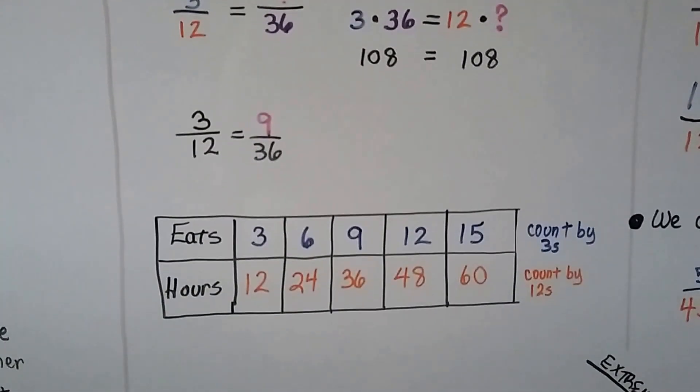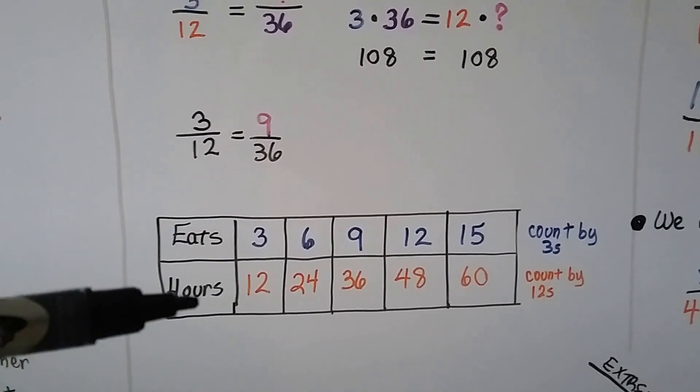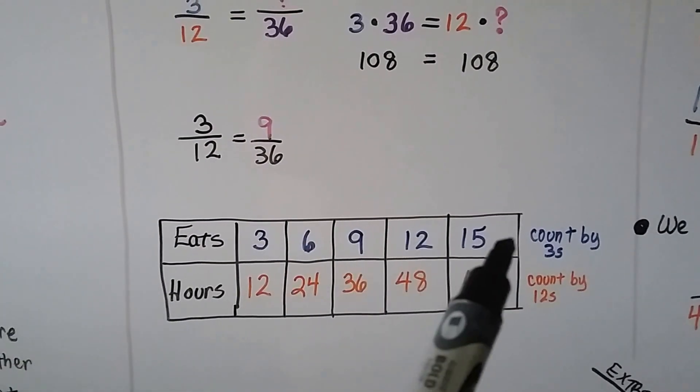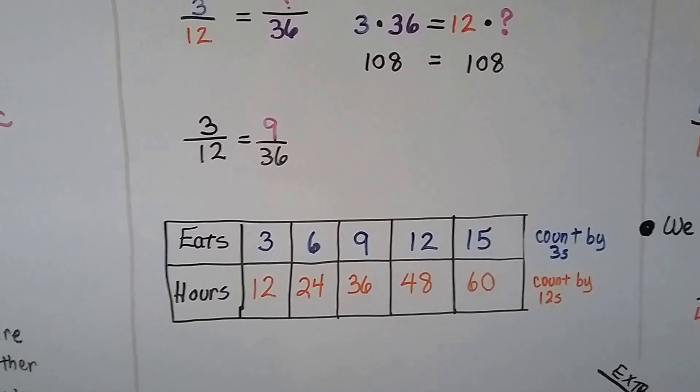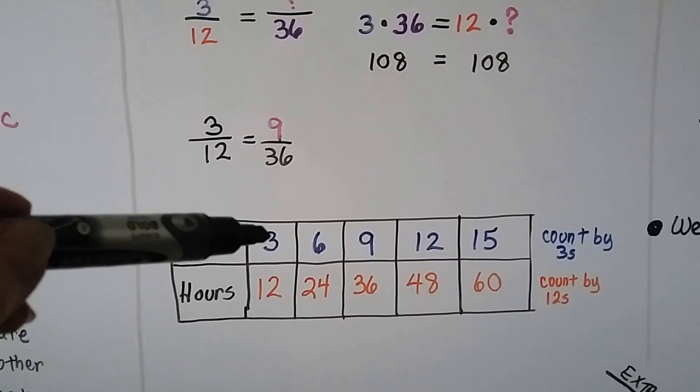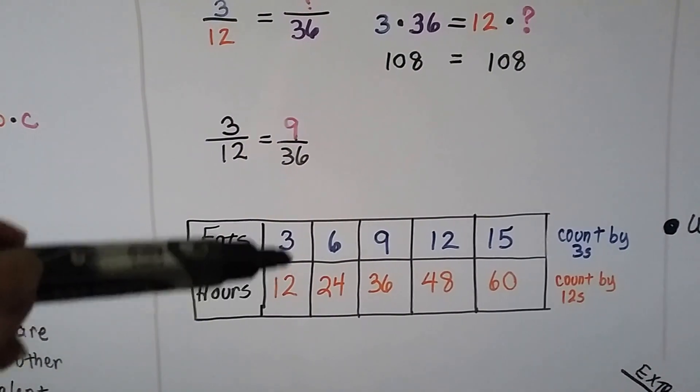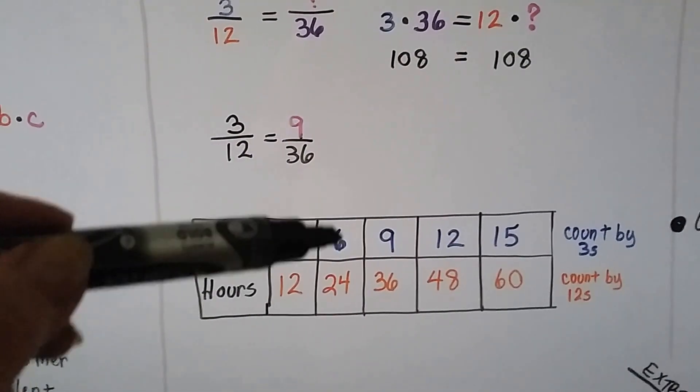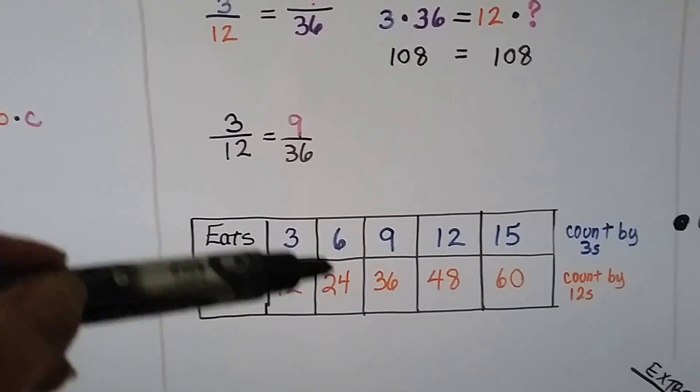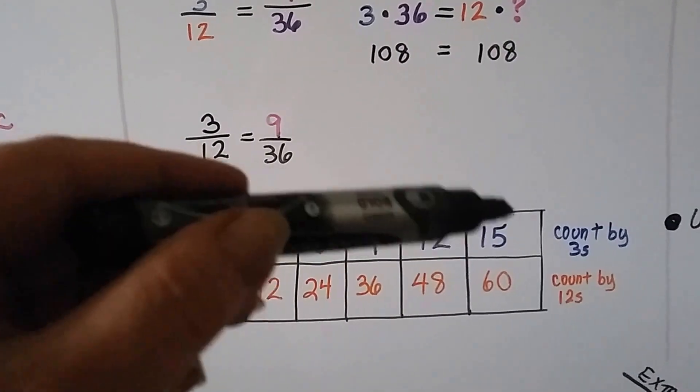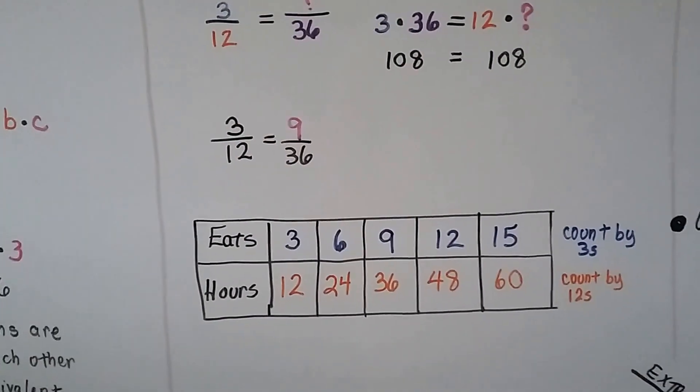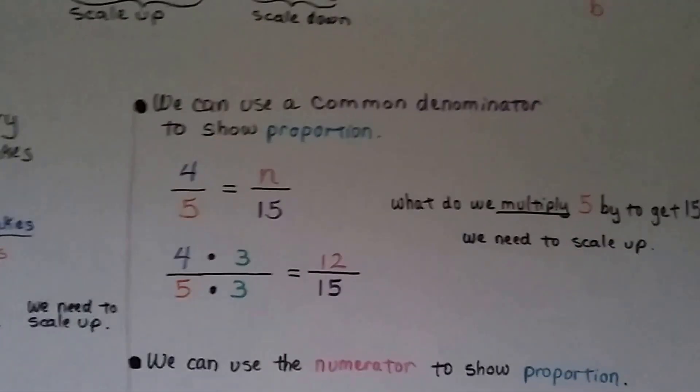We can even make a table. This is how many pancakes he eats, and this is how many hours. We're counting by 3s here, and we're counting by 12s here. 3 times 1 is 3, 12 times 1 is 12, 3 times 2 is 6, 12 times 2 is 24. So there's a few ways we can do this.